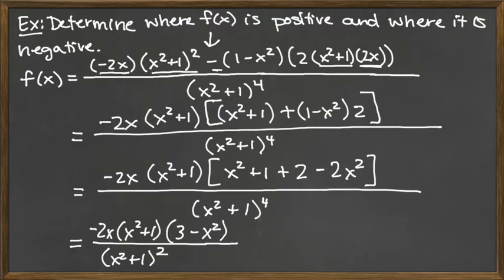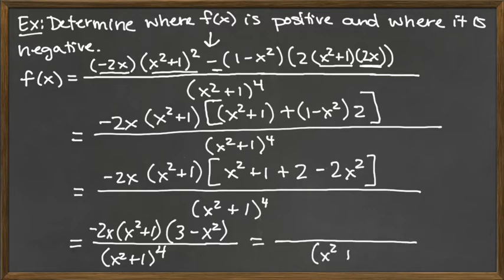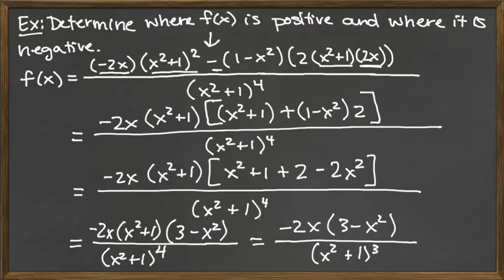I notice I made a copy error — I'm so used to the denominator being squared for the quotient rule that I forgot this was the quotient rule applied twice. So the denominator should be x squared plus 1 to the fourth power, not squared. Now, there is one copy of x squared plus 1 on the top and four copies on the bottom, so we can cancel one copy. That leaves x squared plus 1 to the third power on the bottom. Our simplified function is negative 2x times the factor 3 minus x squared, all over x squared plus 1 raised to the third power.